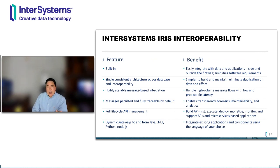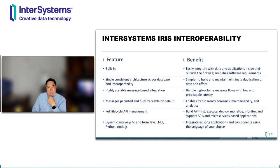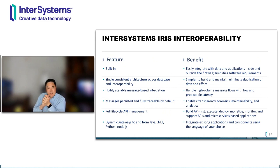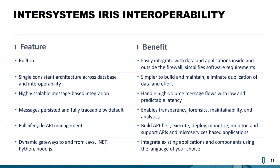You already have legacy systems, and you have partners or customers with systems you have no control over. So you need to very easily interoperate and integrate your IRIS-based solutions with those systems, whether on-prem within your enterprise or in the cloud. One thing I want to highlight: the way you build the next generation of mission-critical systems is API-based — the API economy. IRIS has a full lifecycle API management built in. We also have many dynamic gateways, so inside IRIS you can easily interact with other applications — Java, .NET, Python, Node.js — seamlessly.